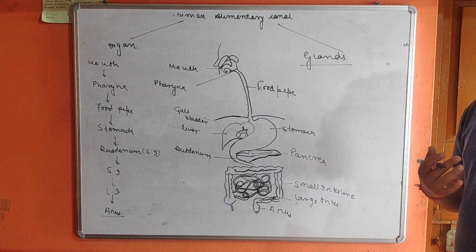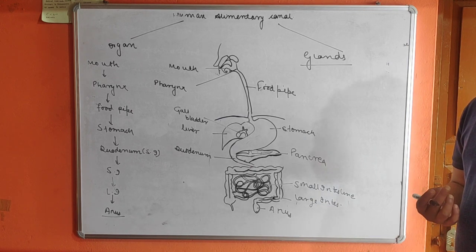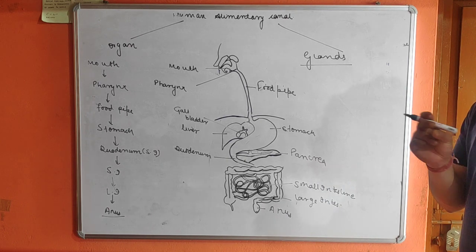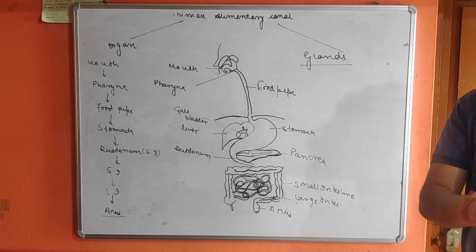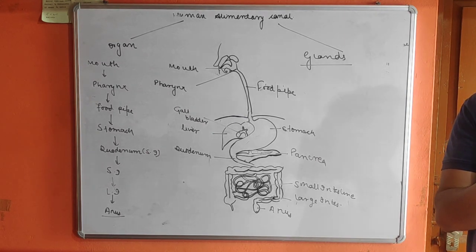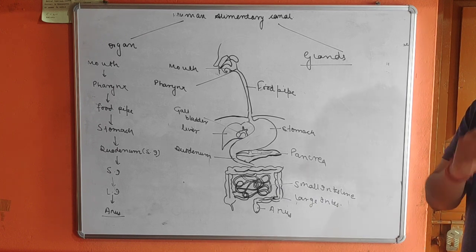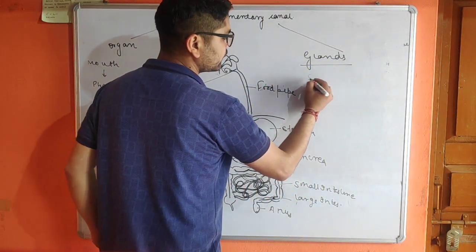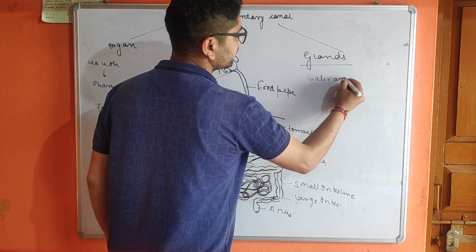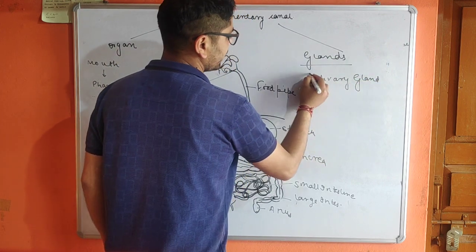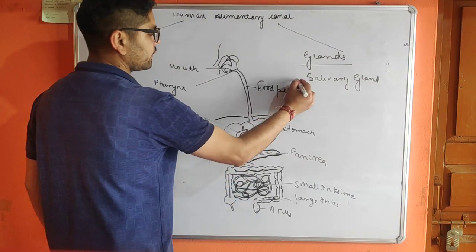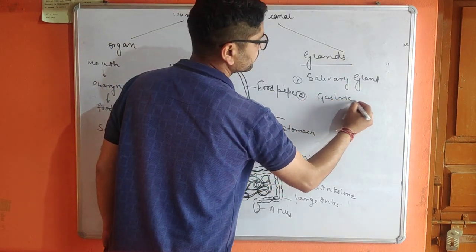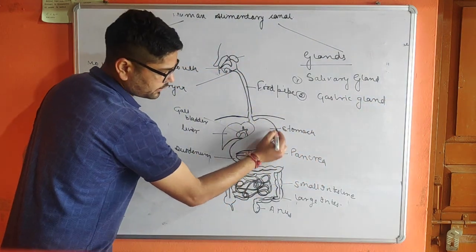Enzymes are biocatalysts — they help in increasing the rate of reaction and speed up the digestion of food without undergoing any change themselves. The amount of enzyme never reduces during digestion, but it helps in converting food from complex form to simpler form very quickly. In the mouth, a gland is present which releases a liquid called saliva. This saliva is released from the salivary gland.